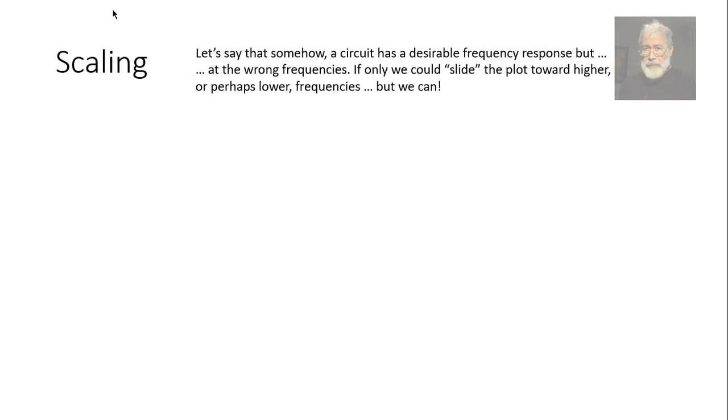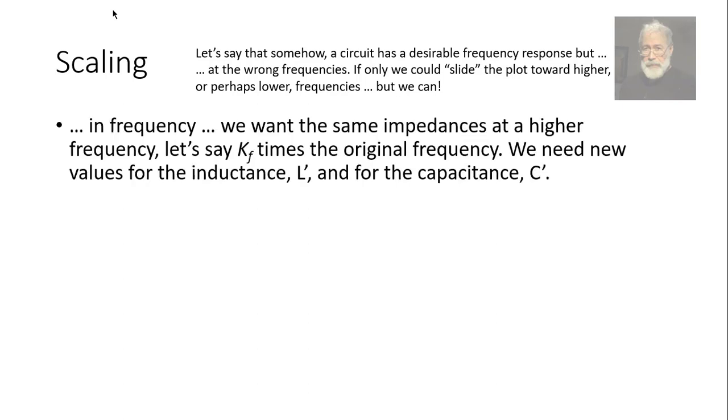Let's say that somehow the filter that we found in the cookbook has the right frequency response, but with corners at the wrong frequencies. If only we could slide that plot towards the right, towards higher frequencies or perhaps to the left to lower frequencies. The truth is that we can. In frequency, we want the same impedances of every element happening at a higher frequency. Let's say at a frequency that is kf times the original frequency, two times higher, a hundred times higher, a thousand, ten thousand times higher than the original frequency. We need new values for the inductances and for the capacitances.